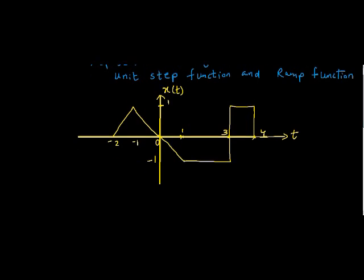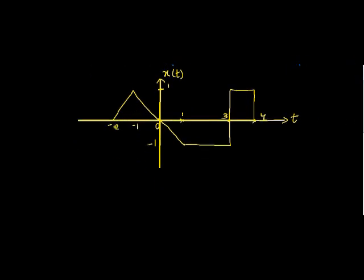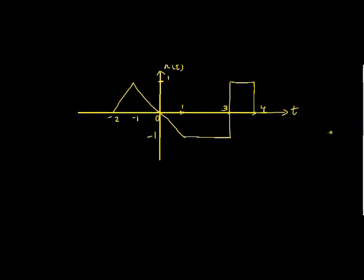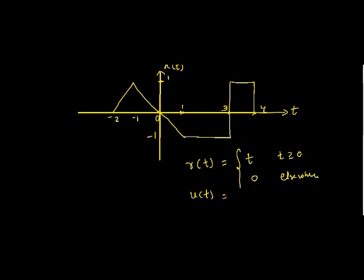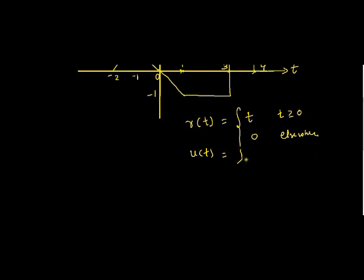Our signal starts at t equal to minus 2. First I will show how we can use the ramp function. The ramp function R of t is equal to t, for t greater than or equal to 0, and 0 elsewhere. Same case with the unit step function — it is 1 for t greater than 0 and 0 elsewhere. For t equal to 0, some people say it is undefined, but for our purposes we can assume it is 1 for t greater than or equal to 0.